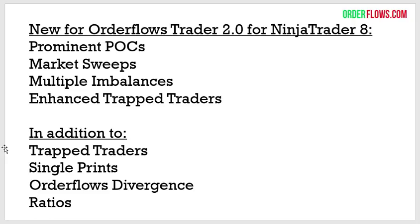The order flows divergence is simple — it's a new or equal high with negative delta, or a new or equal low with positive delta. What makes our divergence different is that it takes price action into account. If you're trying to trade a reversal and the price action in the bar doesn't confirm the divergence, it has a high chance of failing. Other software companies are selling just the basic version of that one indicator for $500 — and all it is, is a new or equal high with negative delta or new or equal low with positive delta. I just saved you $500.